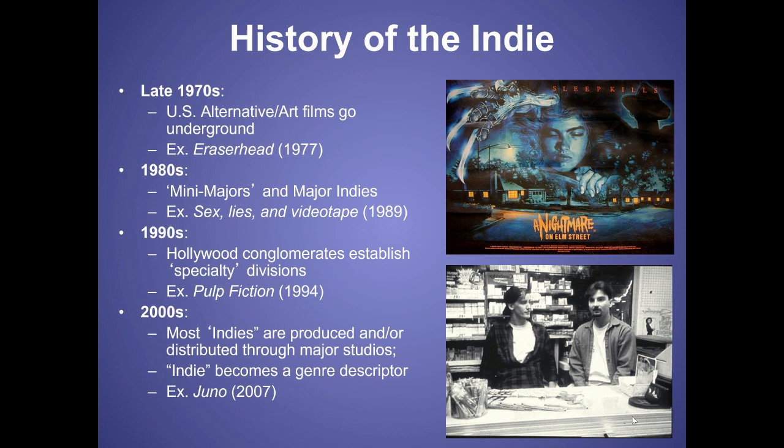History of the indie: in the 70s we have this underground film scene with alternative underground films like Eraserhead and David Lynch's films. In the 1980s we have what are called mini-majors — movies produced by studios but with small budgets, so they have an indie vibe. Then we have major indies, which are indie films with large budgets, blurring the lines. An example is the great movie Sex, Lies, and Videotape, made in 1989.